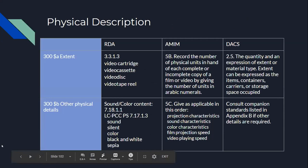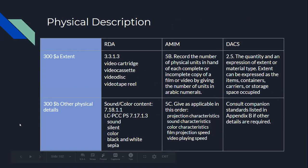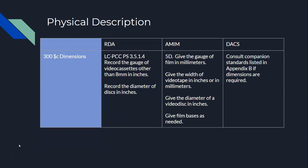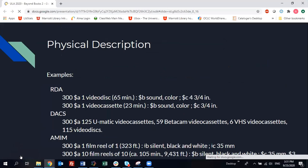For physical description under RDA, you'll use a set of predefined terms — see RDA 3.3.1.3 for motion pictures. For dimensions in the 300 subfield C, record the gauge of the film or video cassette or the diameter of the disc. Under AMIM, you can include the type of film base as well if needed. DACS doesn't give any guidelines for dimensions or other physical information, so it directs you to look to another standard.